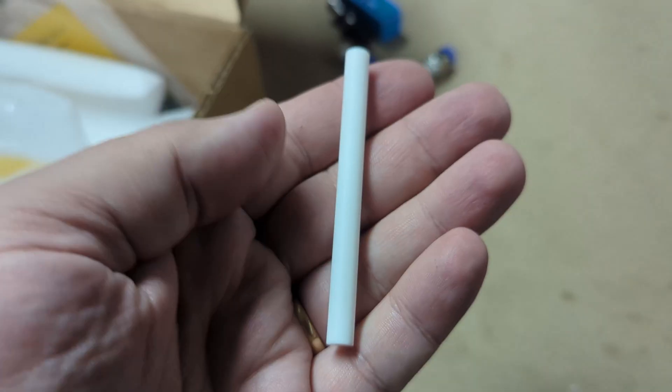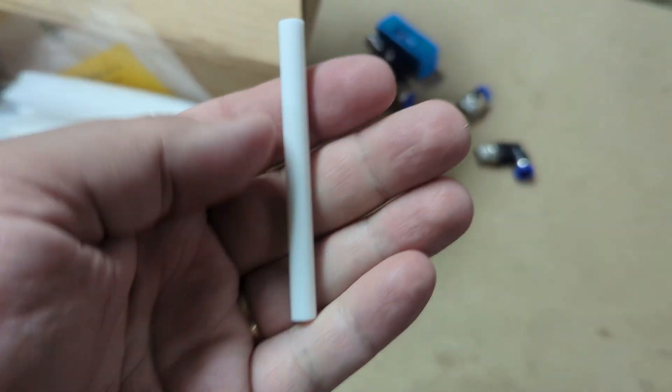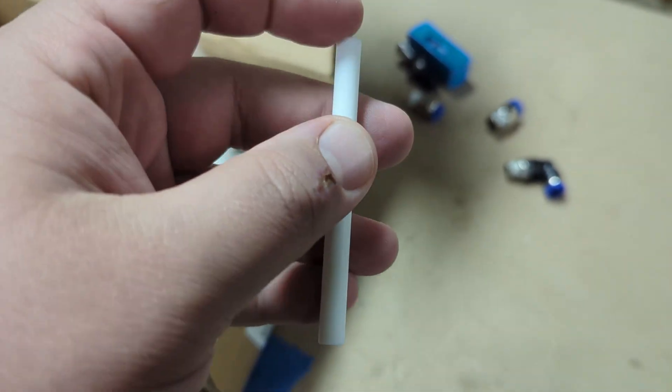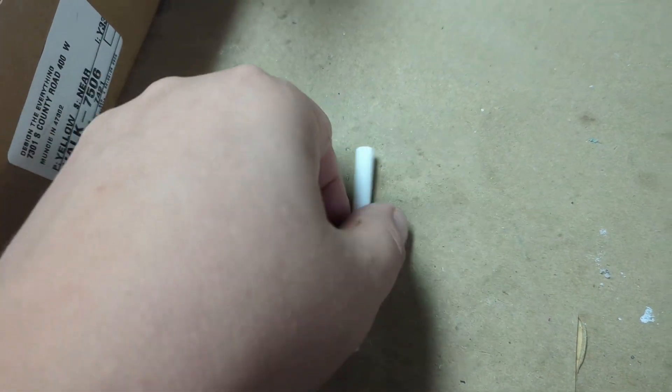And this is our material. This is a piece of Macor, quarter inch in diameter, three inches long. I do have a backup piece if I need it. We need to make 10 parts. The 10 parts, if everything goes right, should be about that much of the material.